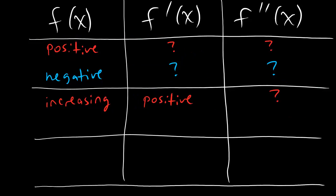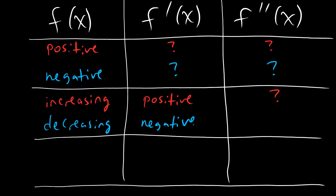We can conclude the exact same thing if we flip all of this. If we flip from increasing to decreasing: increasing changes to decreasing, positive changes to negative, and the question mark for the second derivative stays unknown.